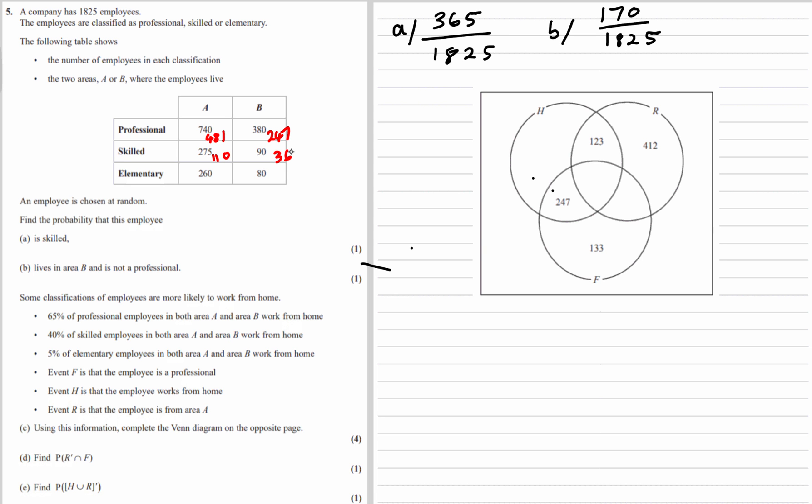5% of elementary employees in both areas work from home. So 5% of 260, 10% is 26, 5% is 13. And 5% of 80 is 4.